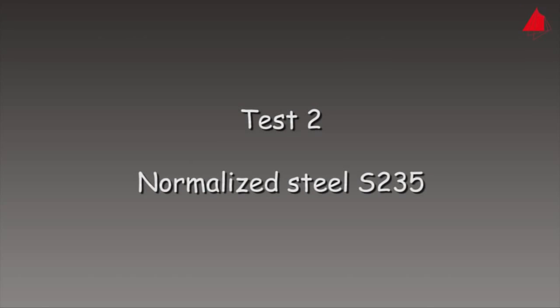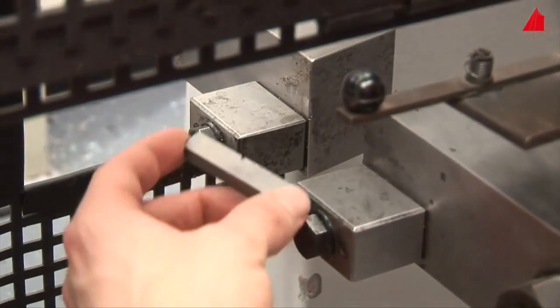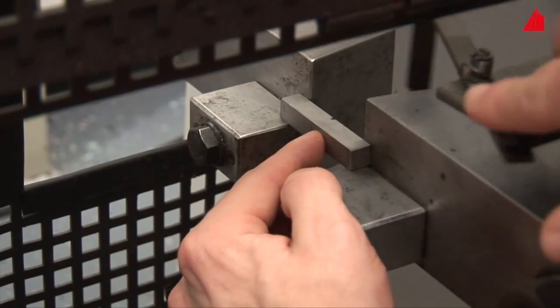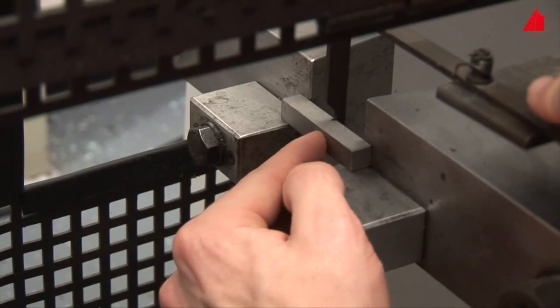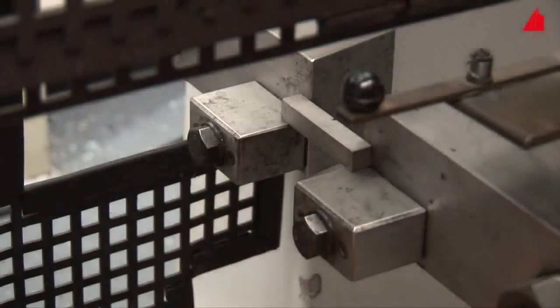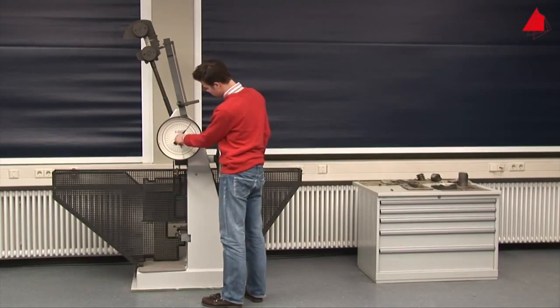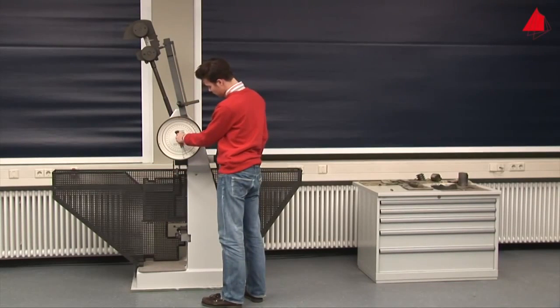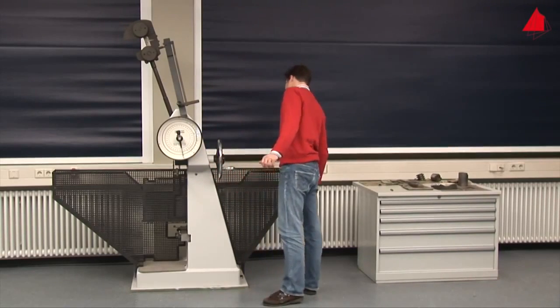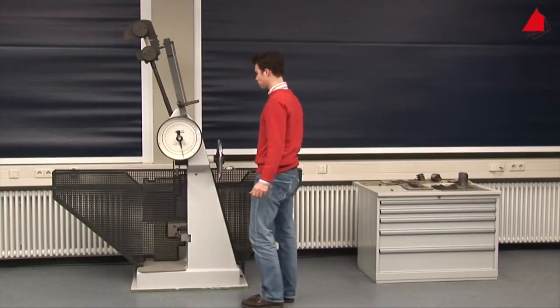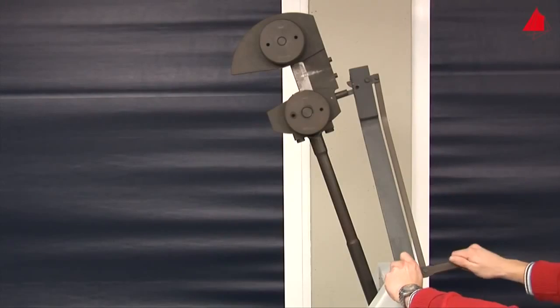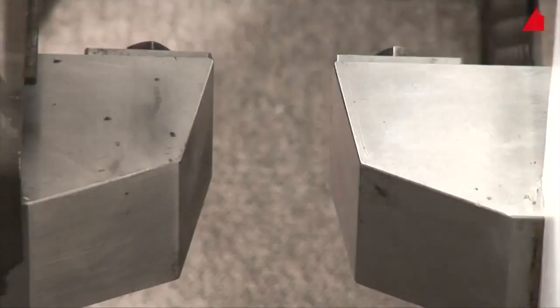Second test. The second specimen has been made from normalised steel S-235. It is also placed on the support and centred. The tester turns the drag indicator to its starting position, rechecks all safety measures and releases the pendulum. This time the impact sounds much deeper and richer.